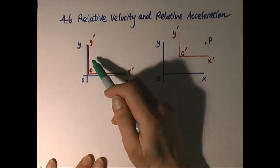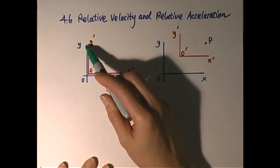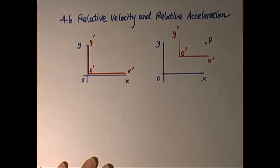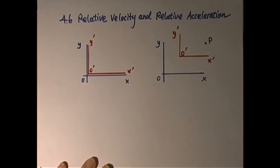Let's look at this case. We have two coordinate systems: x, y, o and the other one is x prime, y prime, o prime. Imagine the x prime, y prime, o prime is the airplane, and x, y, o is fixed on the ground — that is a Cartesian reference frame fixed on the ground. And x prime, y prime, o prime is the Cartesian reference frame fixed on the airplane.